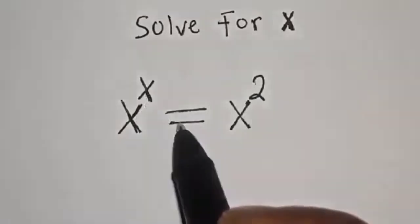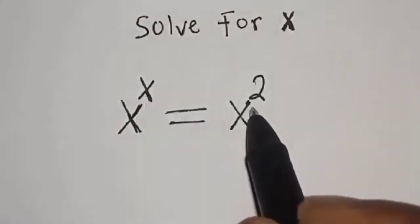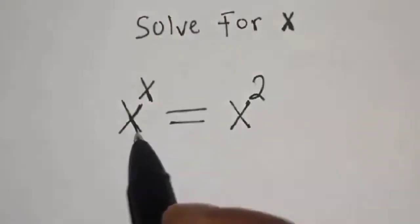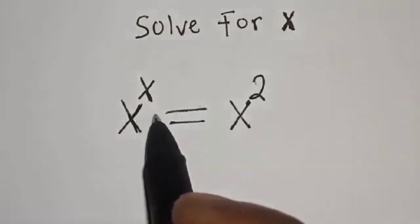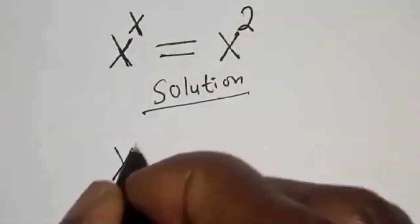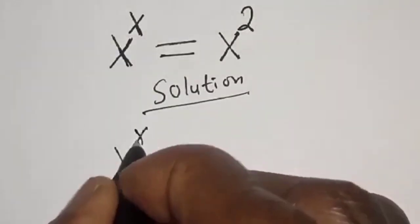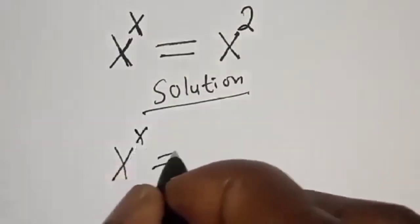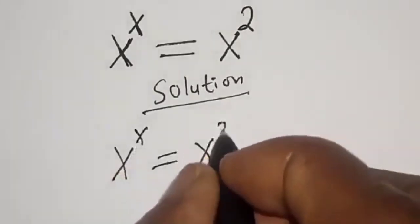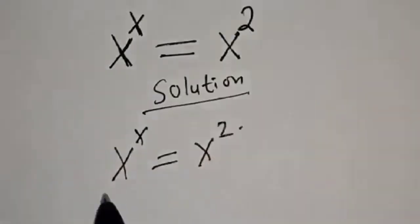s raised to power s is equal to s squared. I want to look at how we can quickly find the value of s from this equation.